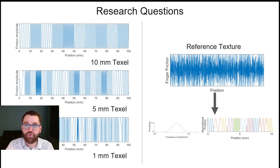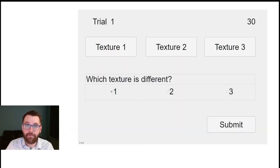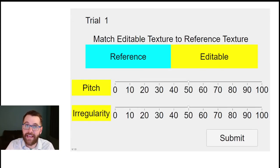For the first test, subjects were asked to discern which of three virtual textures displayed on an ultrasonic friction reduction device was not an exact replica of the others, and instead, a new texture drawn from the same underlying parameters. For the second test, subjects were given control of the pitch and irregularity of an editable texture and asked to match reference multi-frequency textures.